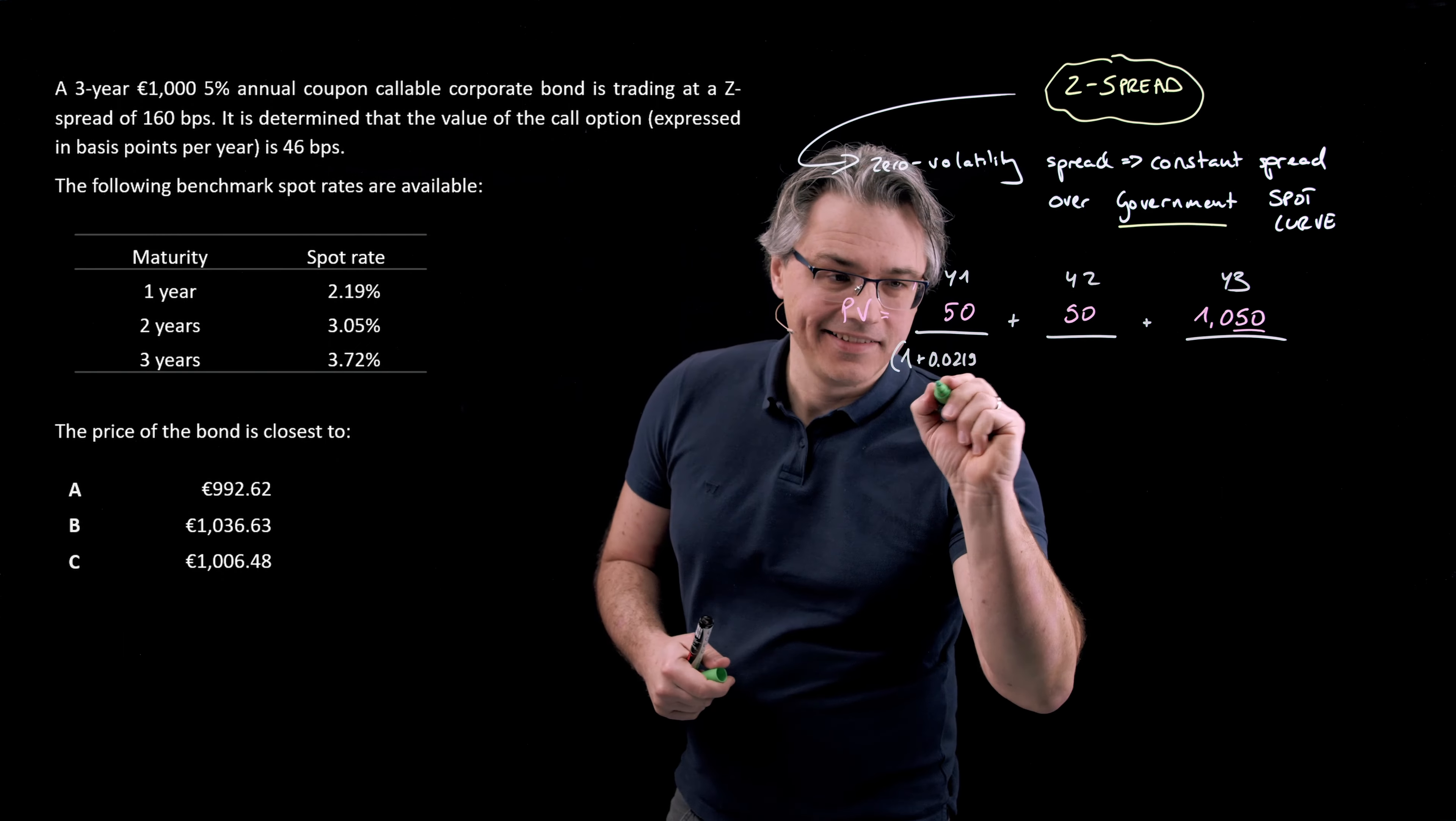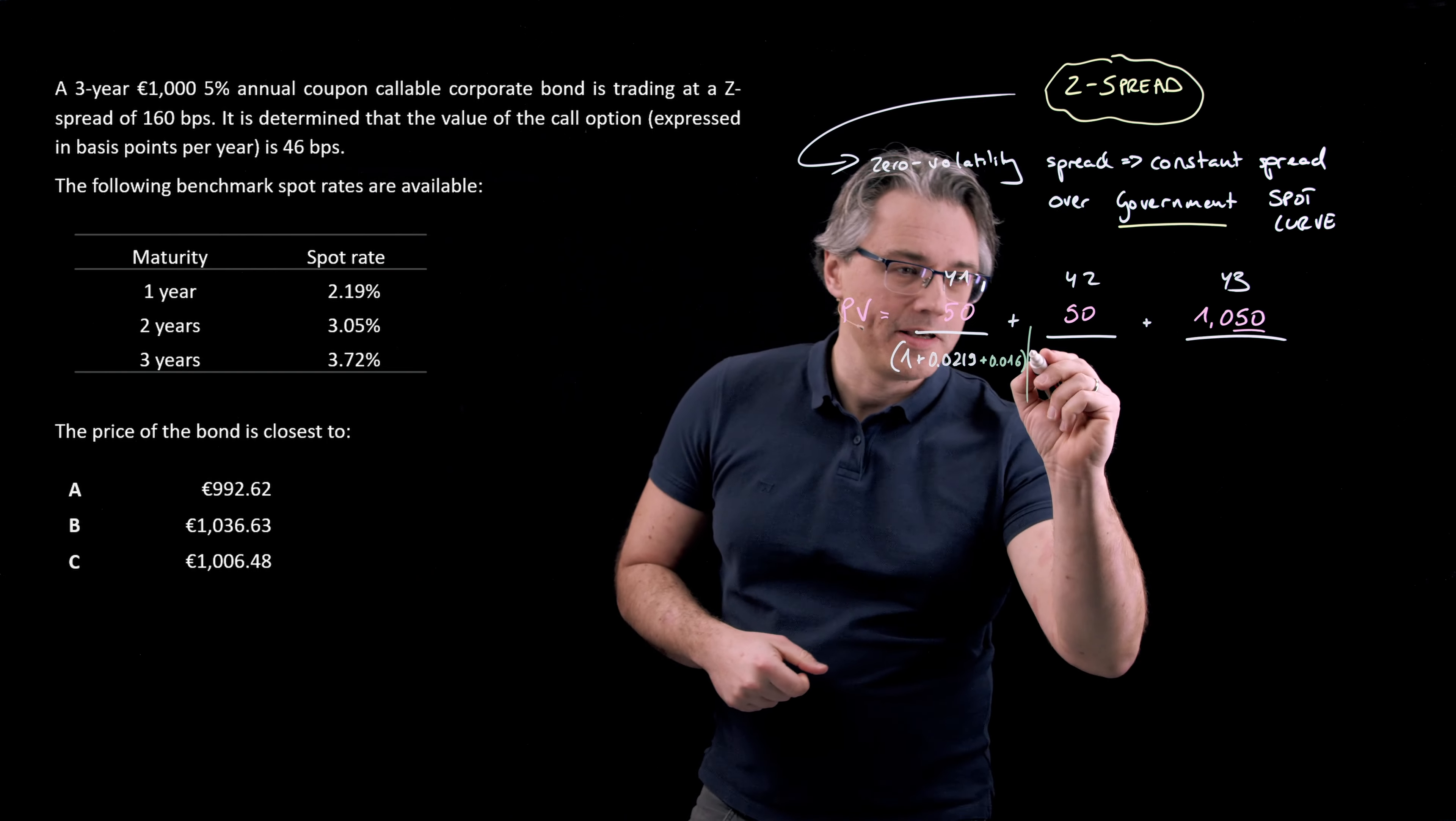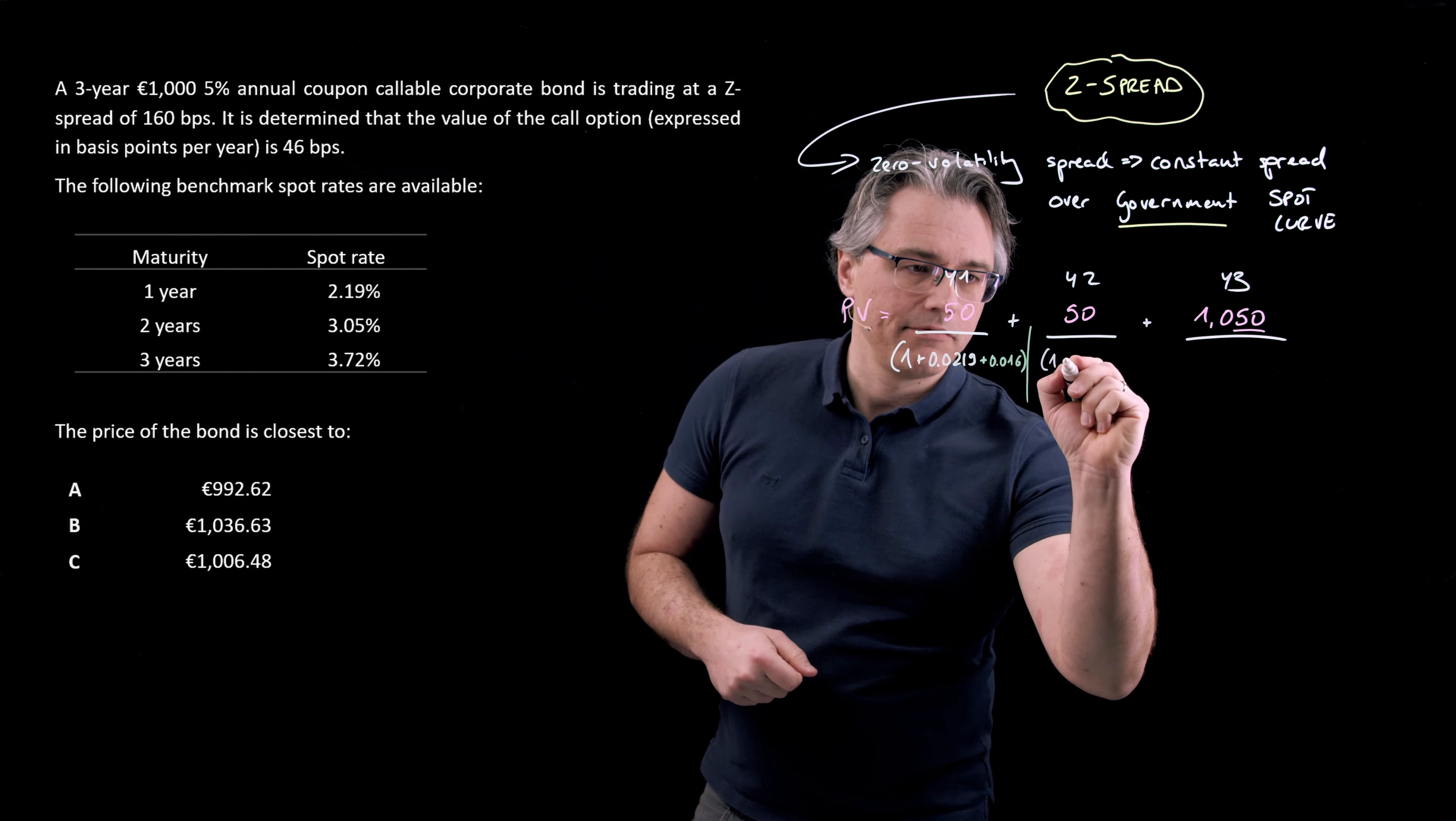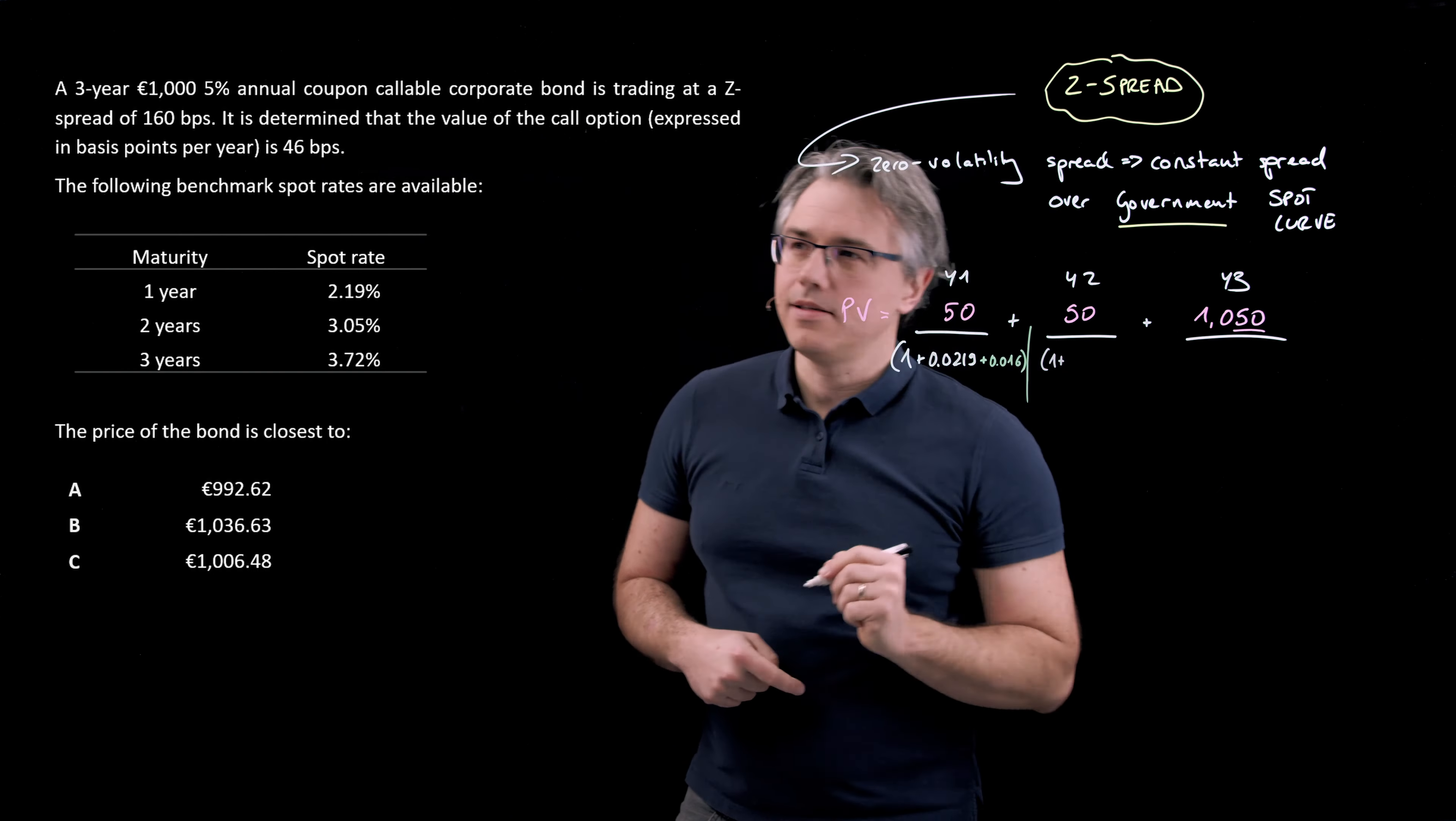Same thing for the second year cash flow. Let's try to squeeze this in. So this is 50, but discounted by one plus the two year spot rate 0.0305 and add to this on top of it, the zero volatility spread, which is a constant spread, meaning you add it. This is a spread you need to add to every single spot rate in order to correctly value the relevant bond. So once again, 0.016. However, because this is a cash flow coming from year two, I'm going to raise this to the power of two.